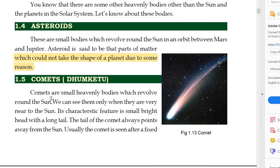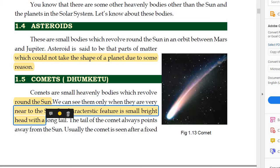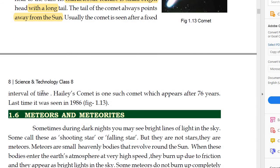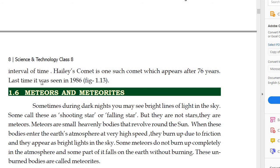Next is comet — Dhoom Ketu. Comets are small heavenly bodies which revolve round the sun. We can see them only when they are very near to the sun. Their characteristic feature is a small bright head with a long tail. The tail of the comet always points away from the sun. Usually a comet is seen after a fixed interval of time. Halley's comet appears after 76 years, and the last time we saw it was in 1986.